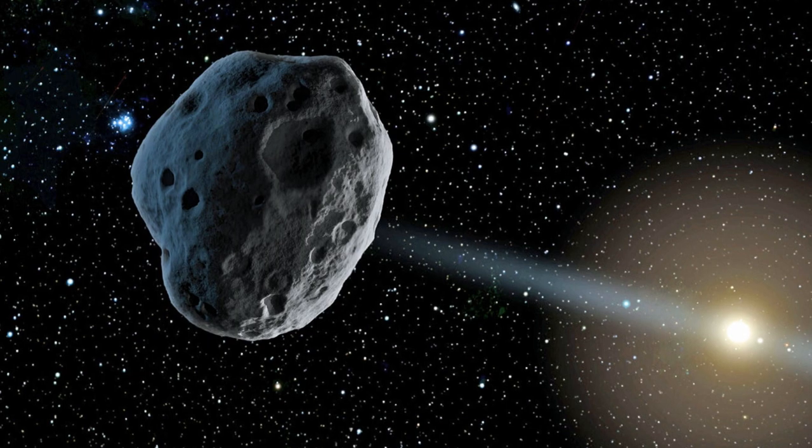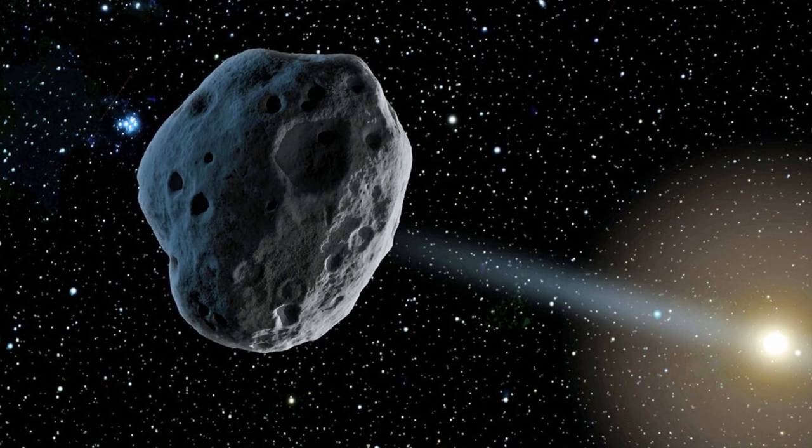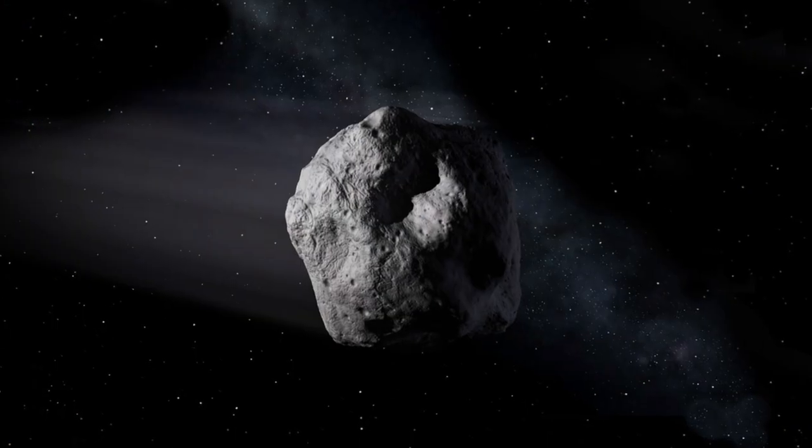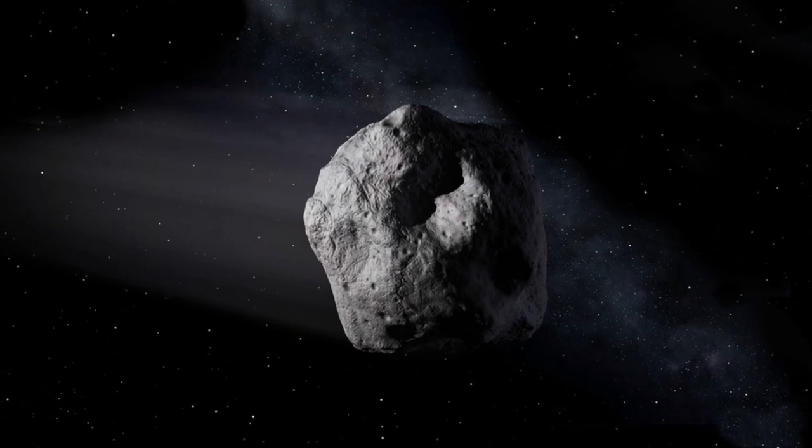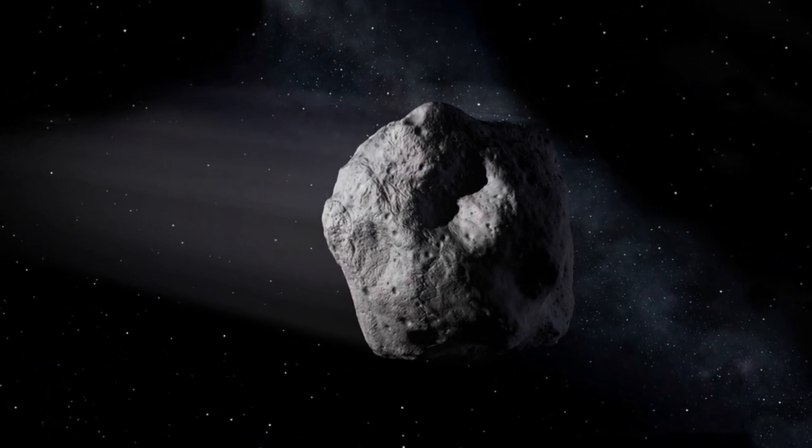This is why different meteor showers are each unique, because each has a different parent body, but also regular because each parent body has a regular orbit. So meteor showers are caused by the trail left behind by asteroids and comets orbiting the sun. They come at the same time every year because we pass through those trails at the same time in our orbit around the sun.